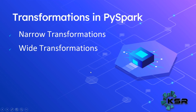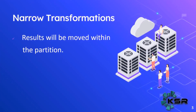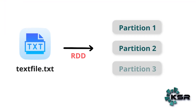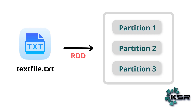There are two types of transformations in PySpark: narrow transformation and wide transformation. Narrow transformation means the results will be moved within the partition. Let's understand how a file will be divided into partitions. Say we have a text file — when we read that into Spark it becomes an RDD, which is then split into multiple partitions stored across worker nodes in the Spark cluster.